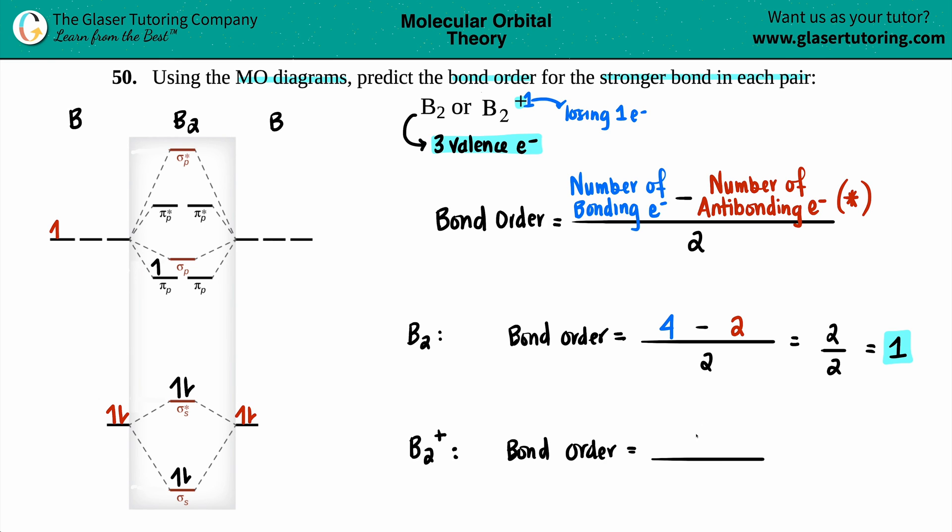Now I can get a new bond order. Bond order equals something minus something divided by two. Antibonding is still two - there was no change. In this one we just dropped our bonding: one, two, three. Three minus two is one, one divided by two is 0.5.